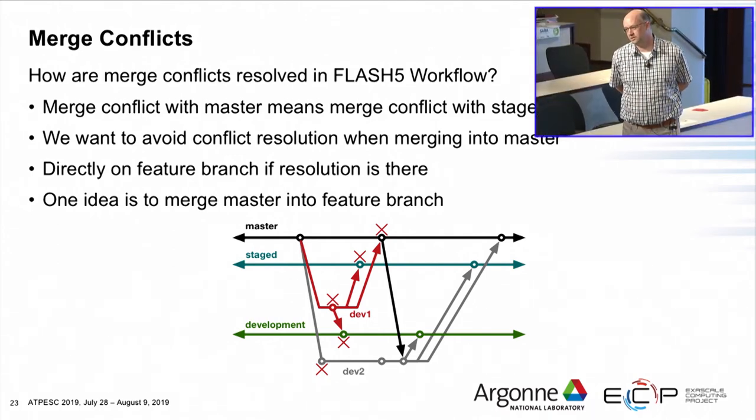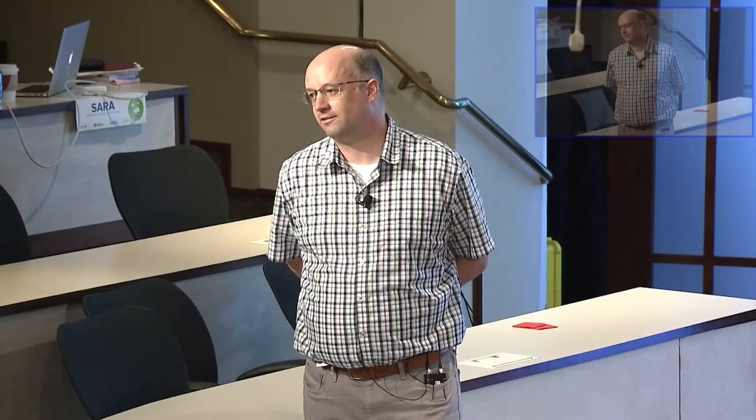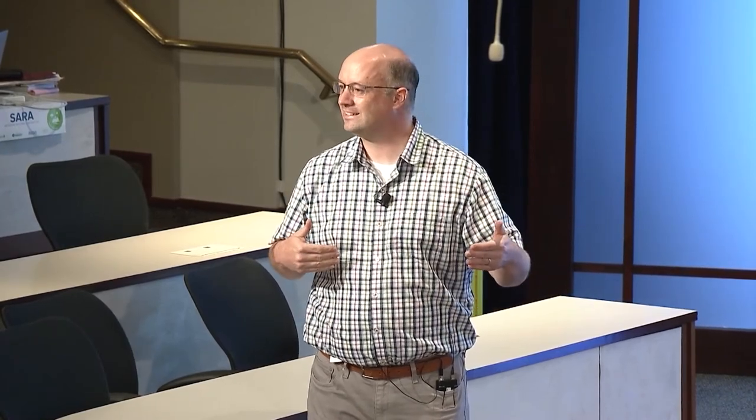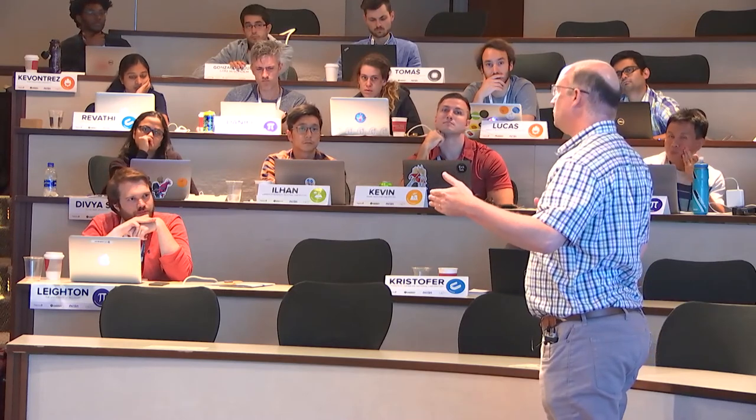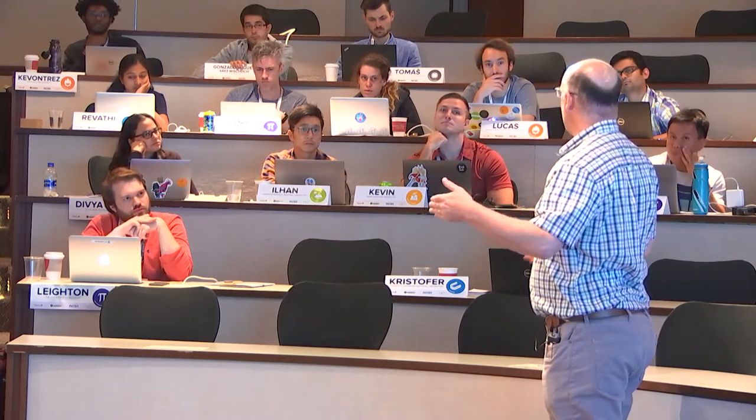This goes back to continuous integration — we try to keep our feature branches short-lived so we don't have to do this sort of thing. I don't know if this is still a thing, but it seems like with GitHub, when you try to compare branches through the web interface, it doesn't do a correct job — it shows you everything that's changed on commits that have nothing to do with your branch. If you do it from the terminal, it's perfectly fine. There are subtle issues with GitHub in particular with this.